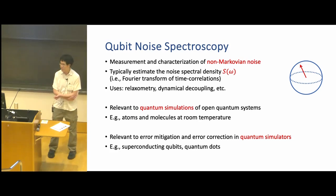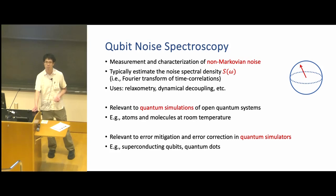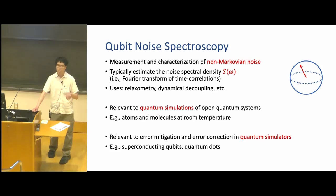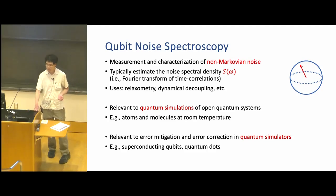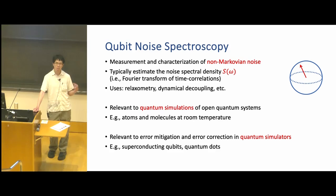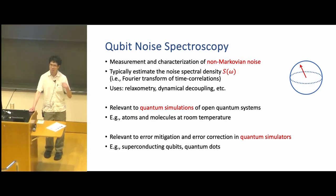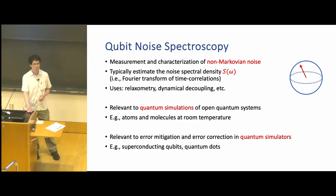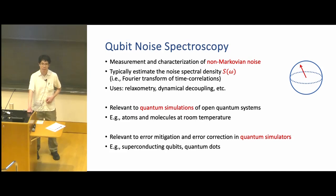One way of approaching this is to study the noise spectral density S(ω), a function that characterizes the strength of noise at a given frequency — essentially the Fourier transform of the time correlation function. In quantum baths, this becomes even more interesting because not only can the bath have a memory, it can have coherence, producing uniquely quantum effects beyond classical non-Markovian noise. This has been used in experiments for things like relaxometry and dynamical decoupling.